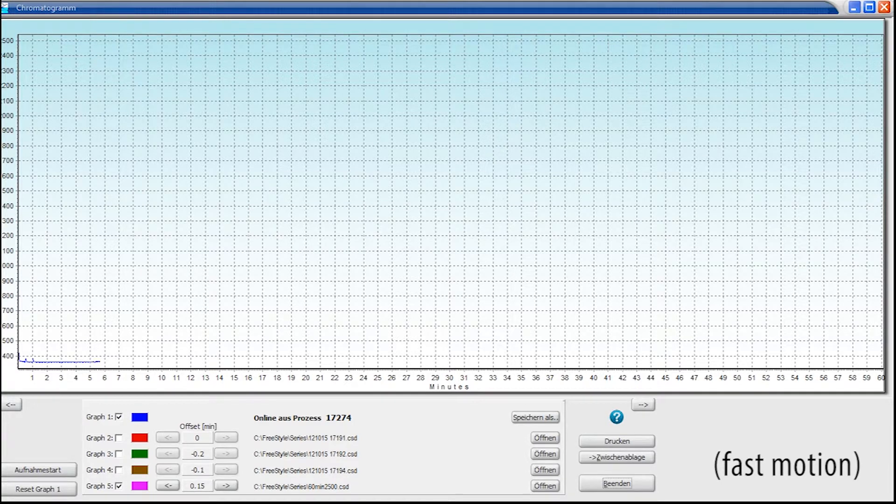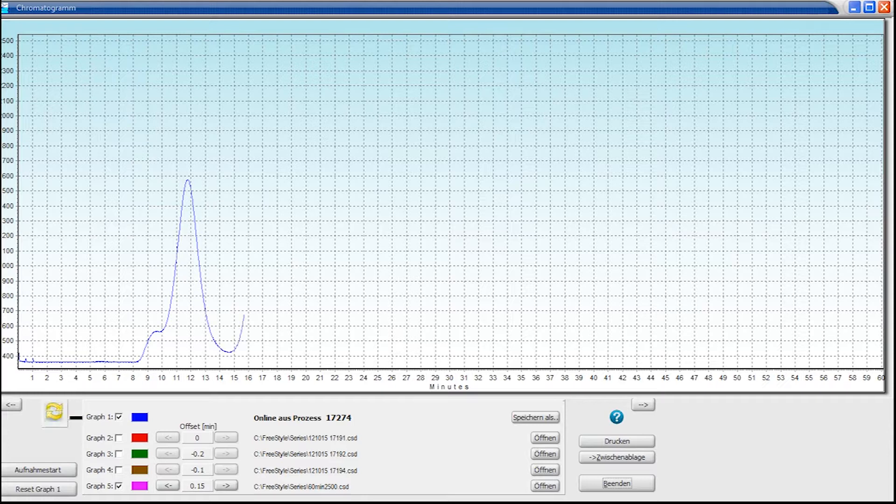The quality of the GPC column should be checked regularly by using a test standard to measure peak separation and shifting of the peaks. For this, you can apply a simple fixed wavelength detector.